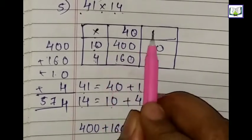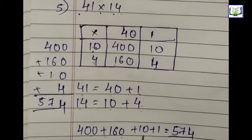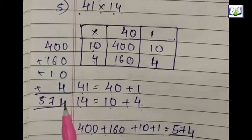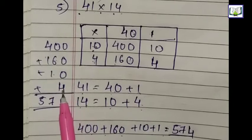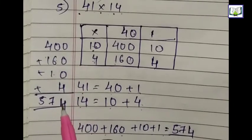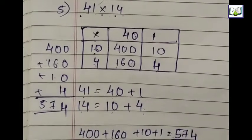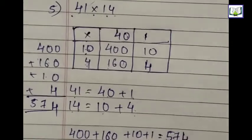We have a total of 400 plus 160 plus 10 plus 4. We can calculate it like this: 400 plus 160 plus 10 plus 4. 4 as it is, 6 plus 1 is 7, 4 plus 1 is 5. Answer is 574. Let's move to the next sum.